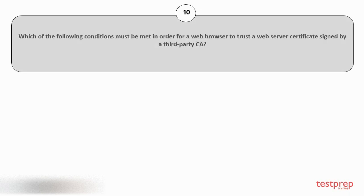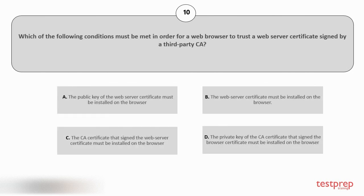Question number 10. Which of the following conditions must be met in order for a web browser to trust a web server certificate signed by a third-party CA? Your options are: A) the public key of the web server certificate must be installed on the browser; B) the web server certificate must be installed on the browser; C) the CA certificate that signed the web server certificate must be installed on the browser; D) the private key of the CA certificate that signed the browser certificate must be installed on the browser.